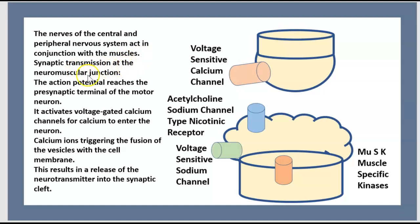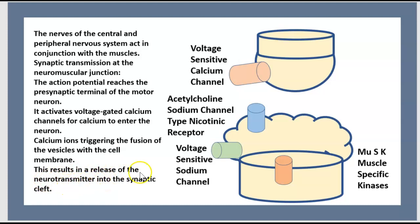Synaptic transmission at the neuromuscular junction: the action potential reaches the presynaptic terminal of the motor neuron. It activates voltage-gated calcium channels, allowing calcium to enter the neuron. Calcium ions trigger the fusion of vesicles with the cell membrane, resulting in the release of the neurotransmitter into the synaptic cleft.